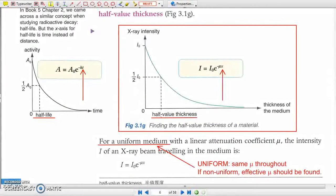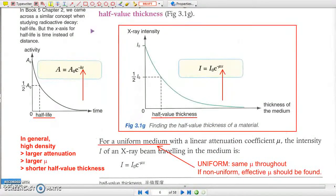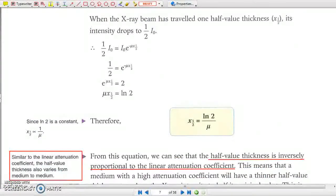In general, a medium with higher density produces larger attenuation and hence a larger linear attenuation coefficient, and so a shorter half-value thickness. In fact, the half-value thickness is inversely proportional to the linear attenuation coefficient.